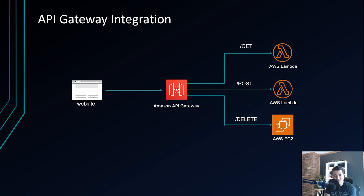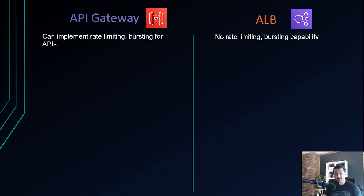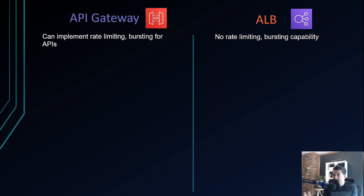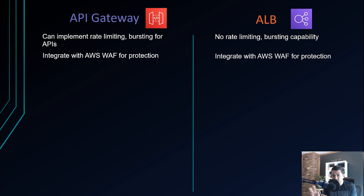So what is the difference between ALB and API Gateway? For API Gateway, you can implement rate limiting and bursting for APIs — for example, limiting a client to 10,000 API calls per month with a burst limit. ALB doesn't offer any such feature.